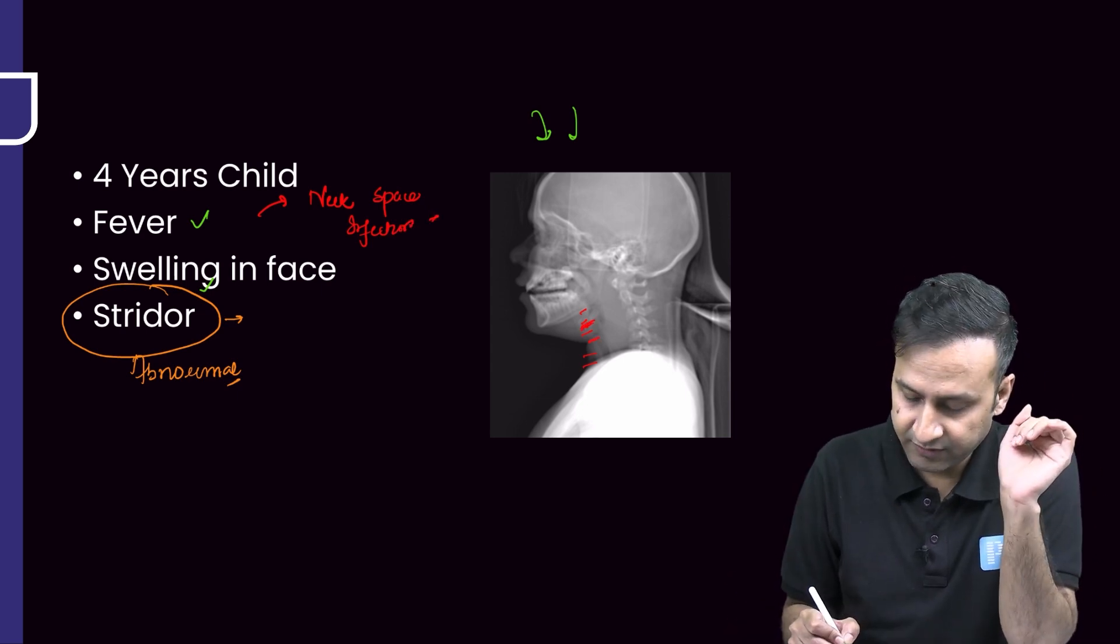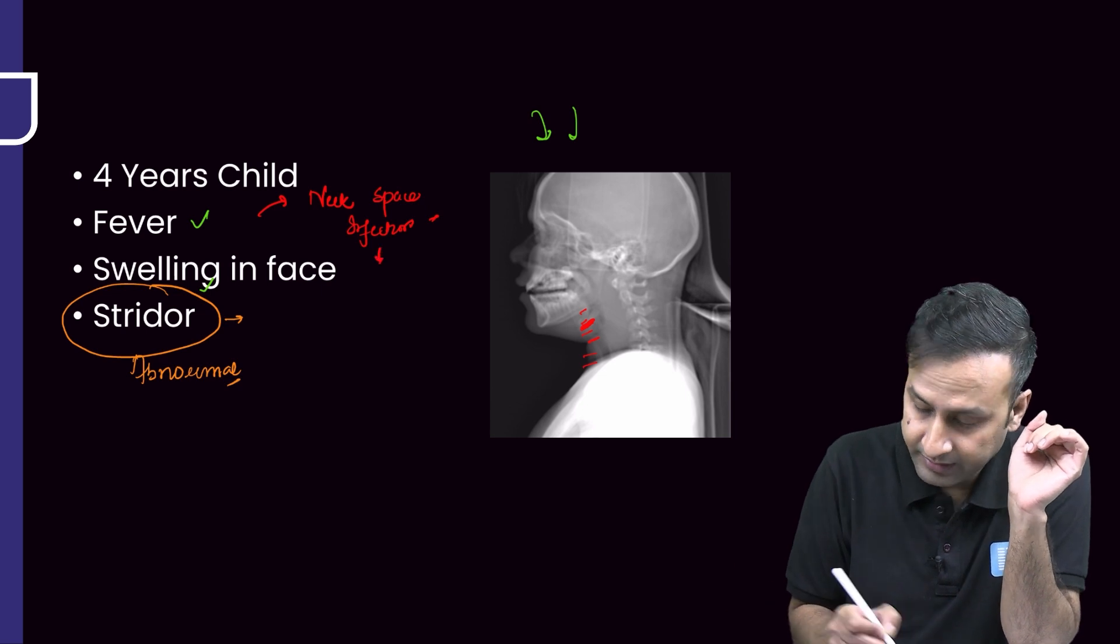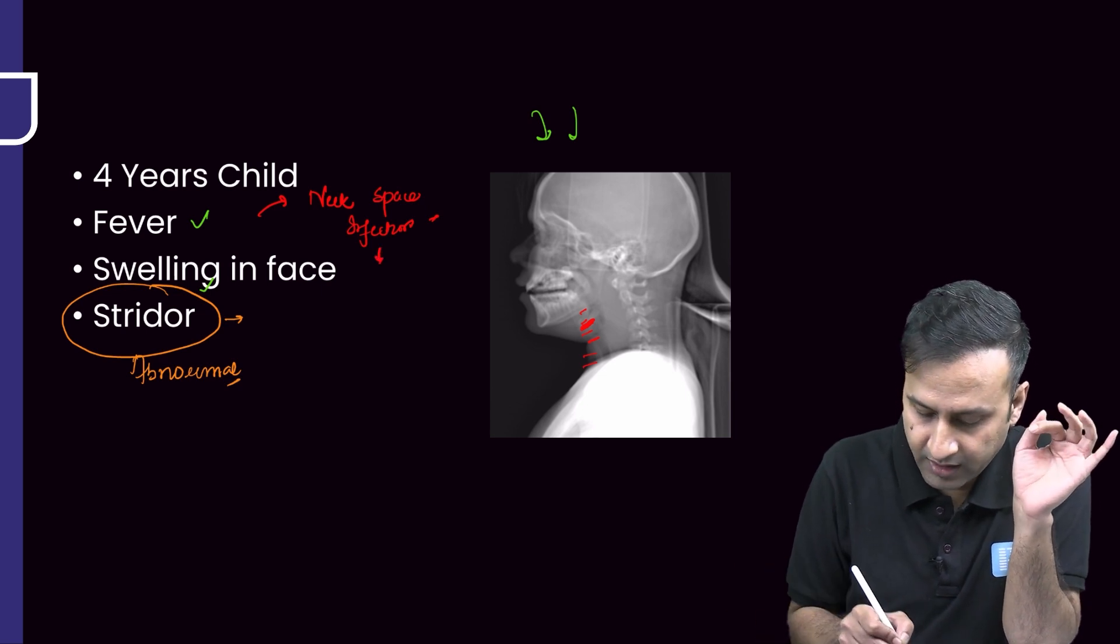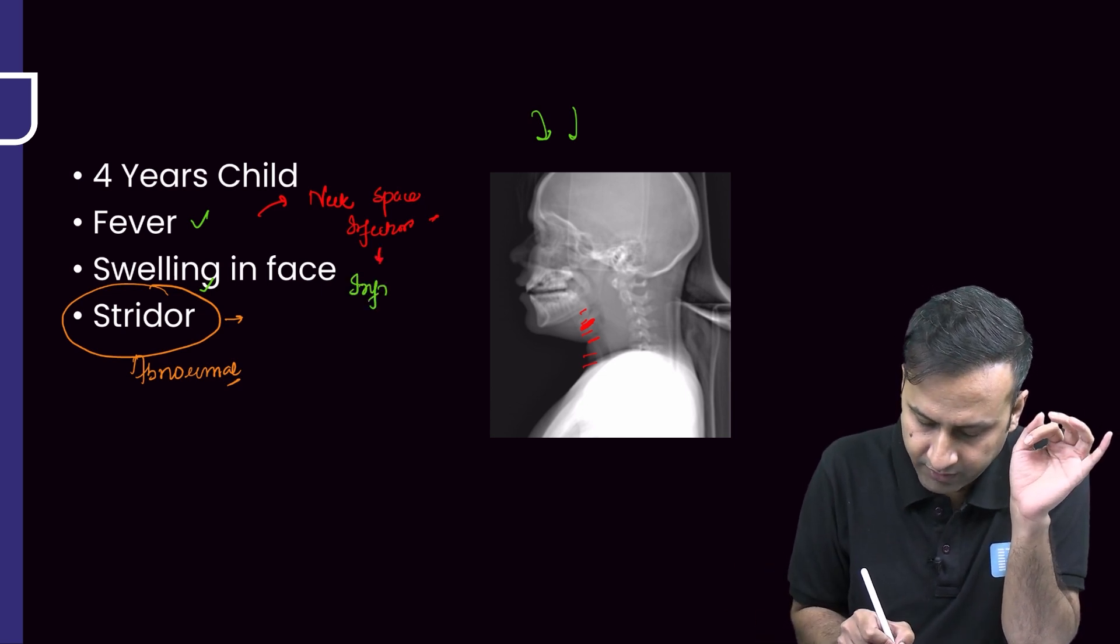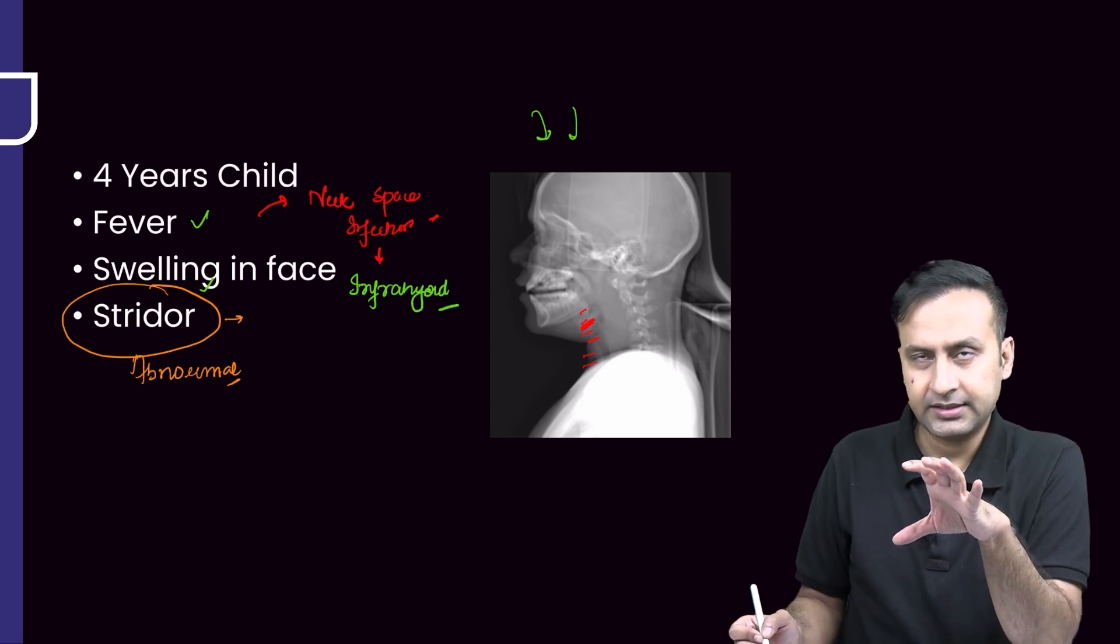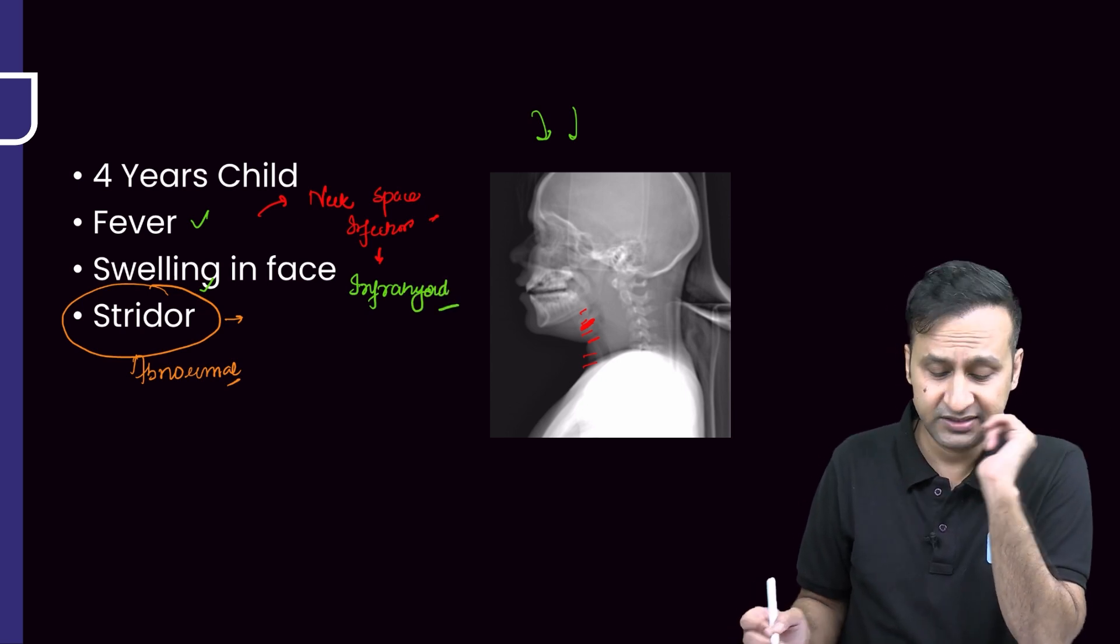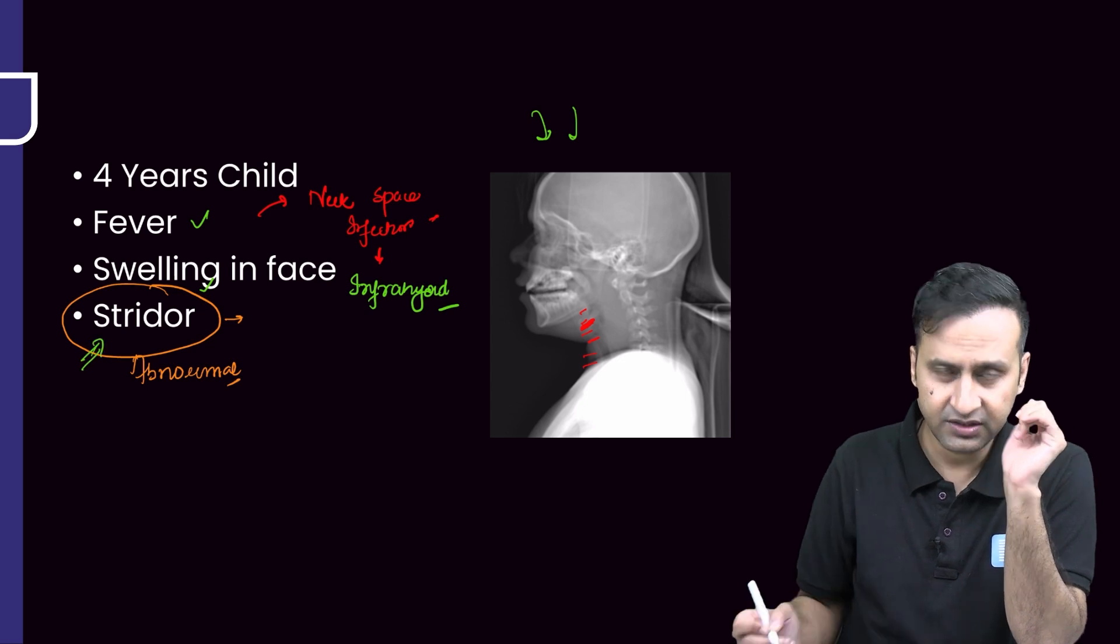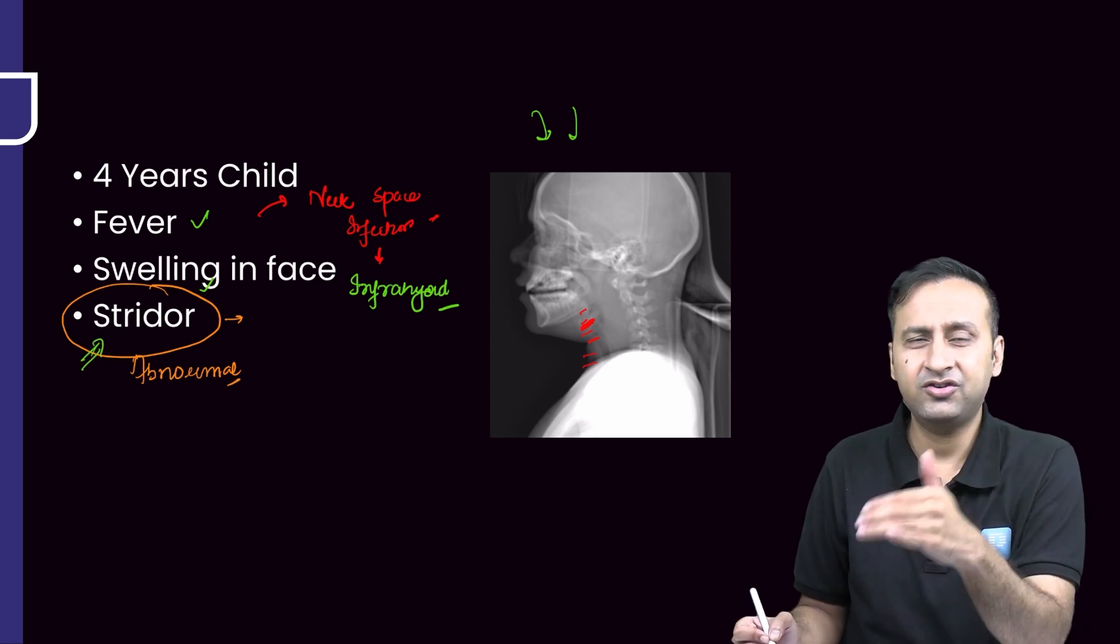Even without getting a CT image, I can tell you there is a deep neck space infection. This is probably the level of the hyoid bone, so it is predominantly infrahyoid. This particular symptom, stridor, means there is involvement of the larynx, which means it's a predominant infrahyoid neck pathology.